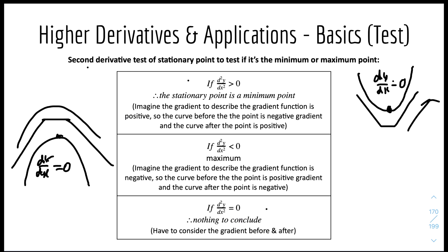If d²y/dx² equals zero, there is nothing to conclude because you have to draw the graph out and consider the gradient before and after, as it could be a point of inflection.